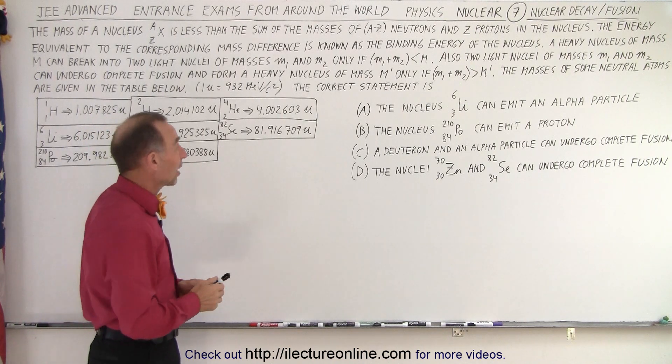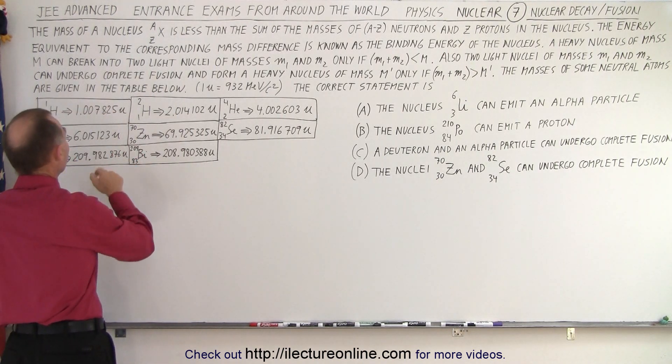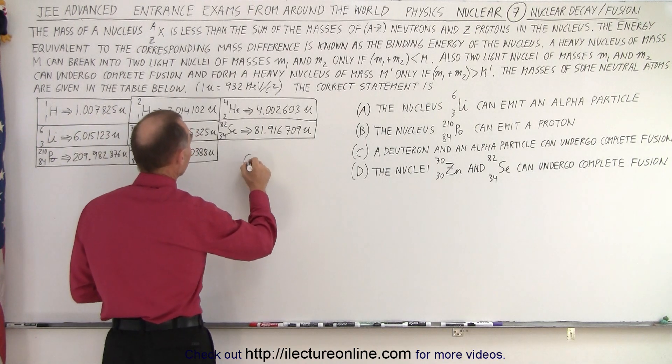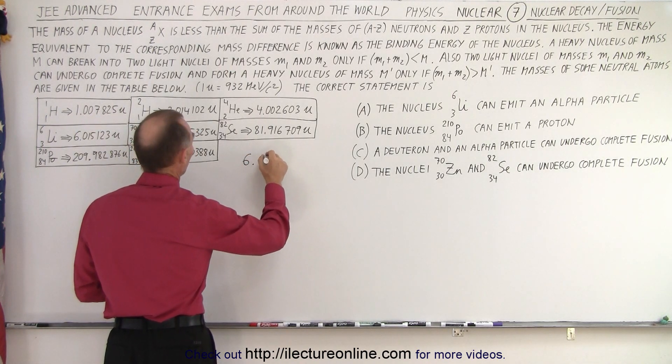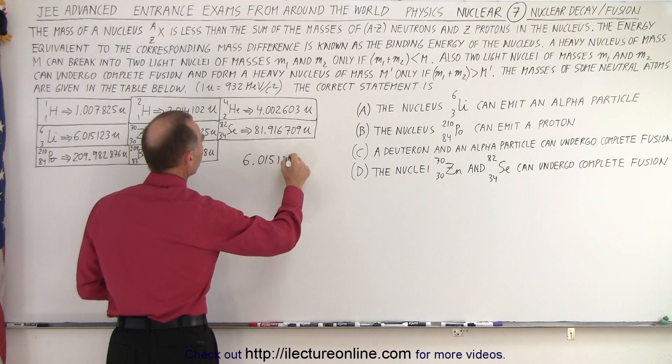Now, you can check, for example, you can take lithium right here, 6.015123, so let's do it real quick, 6.015123, and then subtract from that the mass of an alpha particle.